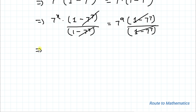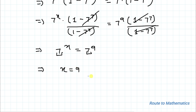The (1 minus 7 to the power 7) terms cancel out on both sides. So we have 7 to the power x equals 7 to the power 9. According to the exponential rule, when the bases are the same on both sides of an equation, the powers must be equal. Therefore x equals 9 is our answer. I hope you have understood the solution.